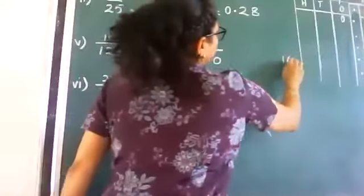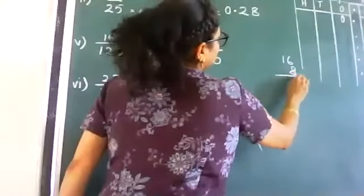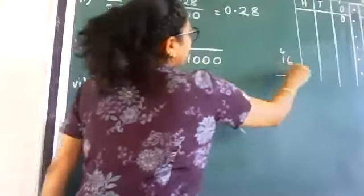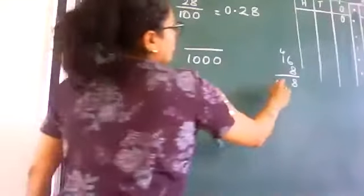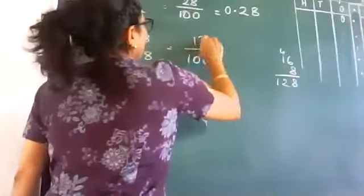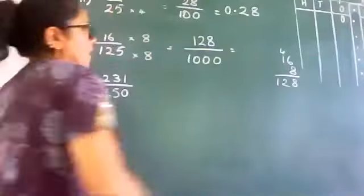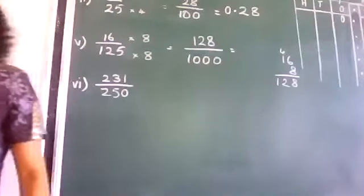So this is 1000. Now 16 times 8, in the working problem we can multiply. 6 times 8 is 48. 8 times 1 is 8 and 4, 12. So 128.